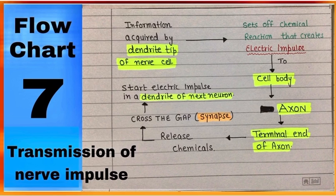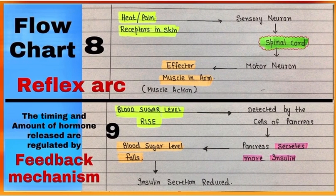Remember, the neuron is the structural and functional unit of our nervous system. The reflex arc is in flowchart number eight.